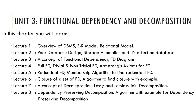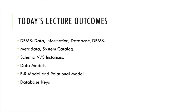Lecture six discusses closure of the set of functional dependencies and the algorithm to find it. Lecture seven covers decomposition — how to divide one table into two — and lossy versus lossless join decomposition. Lecture eight covers dependency-preserving decomposition and its algorithm. In today's lecture, we will revise DBMS, ER model, and relational model, as these topics are very important for units three, four, and five.